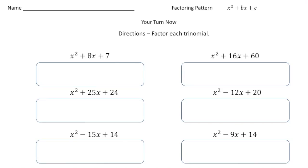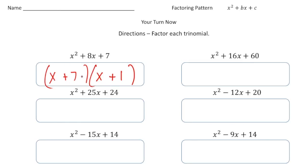Welcome back — let's see how you did on these problems. Here we have x squared plus 8x plus 7. Because it starts with x squared, this is always going to be an x and an x. To get a 7, what times what gives a 7 but adds up to 8? That's plus 7 and plus 1 — you could rewrite this as x plus 1 times x plus 7 and get the same thing. Next: x squared plus 25x plus 24, which gives us x and x, with plus 24 and plus 1.